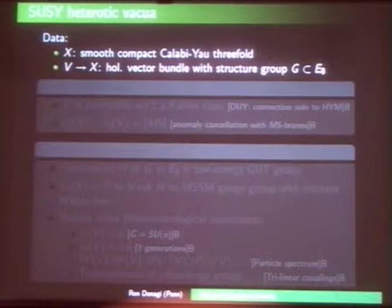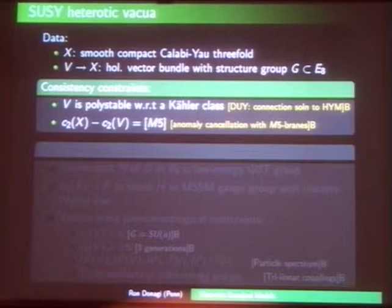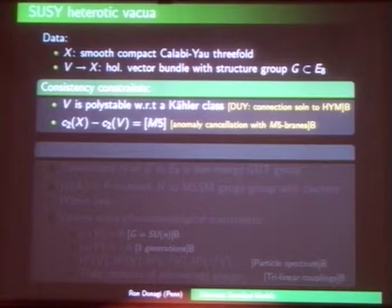The first chapter reviews SUSY heterotic vacua. We take X to be a smooth Calabi-Yau threefold with a bundle on it, structure group G, which can be any subgroup of E8 — typically SU-4 or SU-5. We have two kinds of conditions on the bundle. First, for consistency within string theory, V should be polystable and satisfy anomaly cancellation. Polystability is a technical mathematical notion needed to have a connection solving the Hermitian-Yang-Mills equations, by the theorem of Donaldson-Uhlenbeck and Yau.